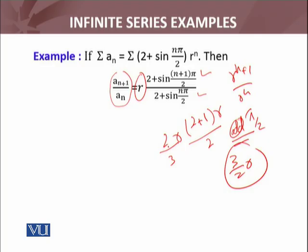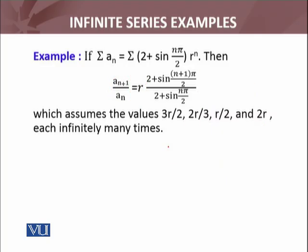Let's see what are the possibilities. This sequence, as I have just explained, assumes the values: 3r/2, 2r/3, r/2, and 2r. These are the only possible values. And it depends upon whether n is odd or even. If n is odd, n+1 will be even. If n is even, n+1 will be odd. So sine of odd multiples of π/2 will be either 1 or -1. With 1 we get 3r, and with -1 we get r/2.